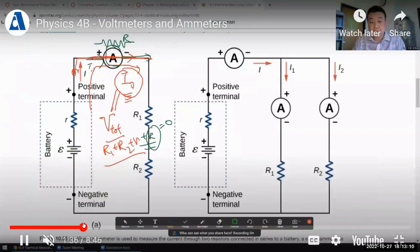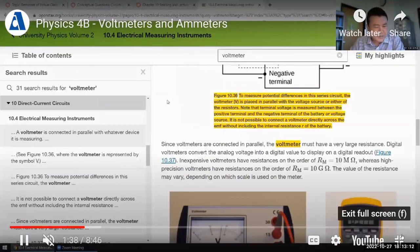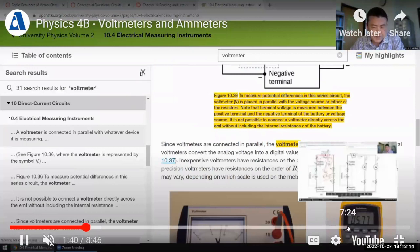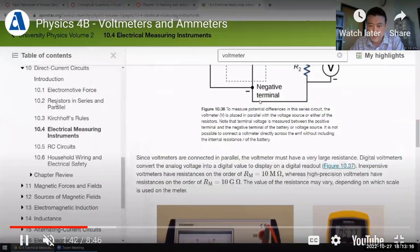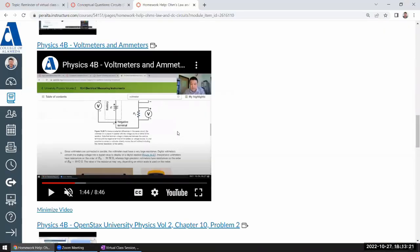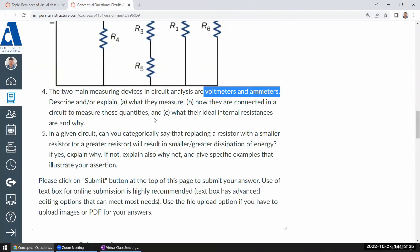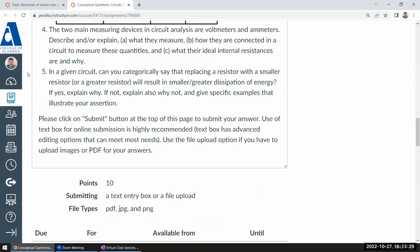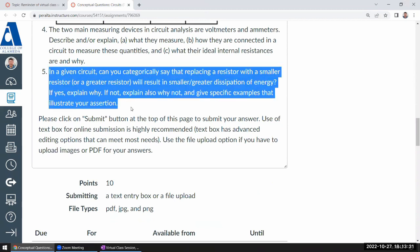So your textbook covers voltmeters and ammeters in chapter 10, section 10.4. That feels super late to me, but that's where it is in your textbook, and it's covered in detail here. So with those, I think this last question here, you kind of saw this, saw some aspect of it, again, with your intro to circuits lab, which is why we did the lab.